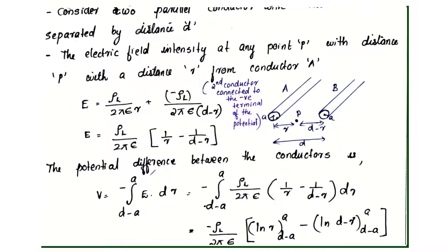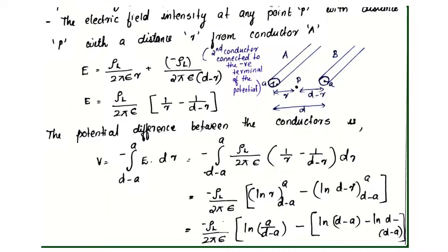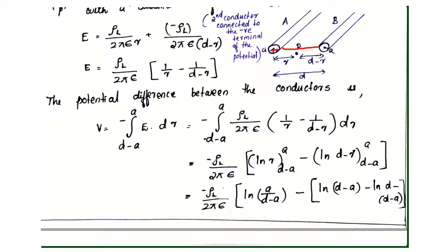The potential difference V equals minus integral of E dot dr. With respect to r we can integrate it. The limits are from d minus a to a: minus integral from d minus a to a of rho_l divided by 2 pi epsilon into 1 by r minus 1 by (d minus r) dr.